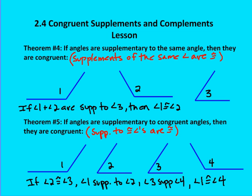Some theorems and instruction on the theorems. Theorem four: if angles are supplementary to the same angle, then they are congruent. So if angle one and angle two are both supplementary to angle three, then they are congruent. If angle one is supplementary to angle three, and angle two is supplementary to angle three, then angle one and angle two are congruent.